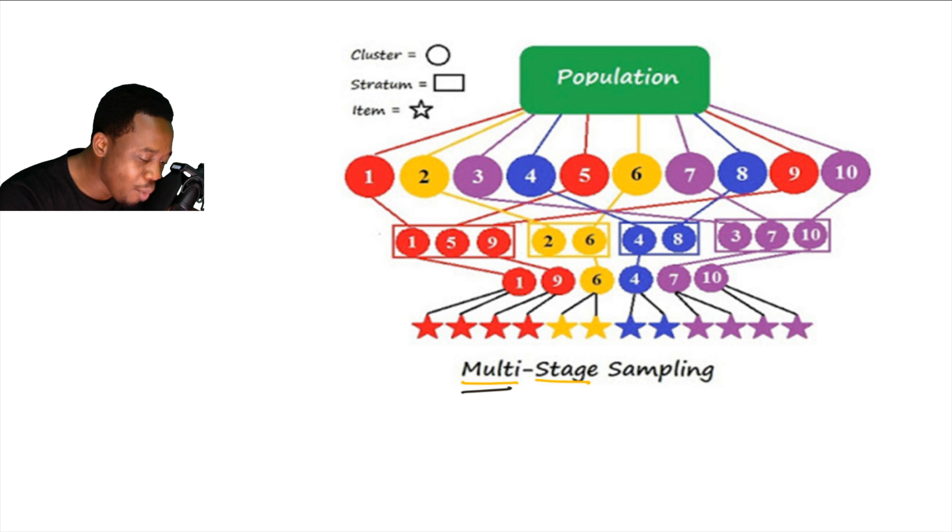You have to apply more than one sampling method. It is multi and the stage is more than one. The method is more than one method. If you apply any of the methods we discussed in another video, you apply at least two because it must be multi-stage sampling.